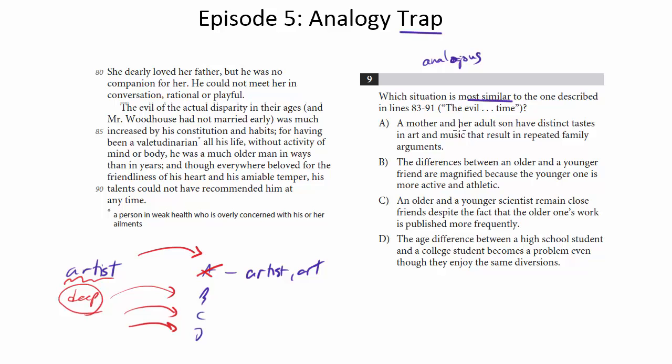Let's look at A. A mother and her son have distinct tastes in art and music that result in repeated family arguments. Be very careful. This is one of the traps. This is about a father and a daughter. This is about a mother and a son. Superficially, the relationship seems the same. But when you look at the full choice, it says that their distinct tastes result in arguments. Does it say anything about how they're arguing here? Is that the structure? Is that what's going on in this scenario? No. It's just that they're not going to be compatible due to age difference, due to health differences. So we can go ahead and get rid of A.